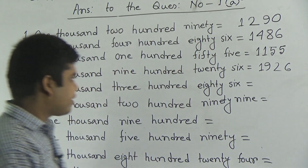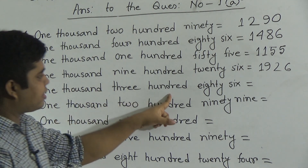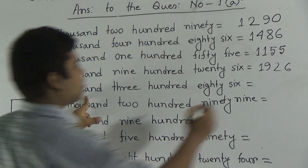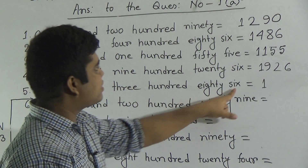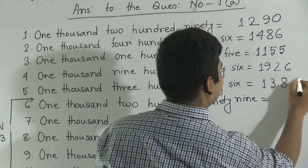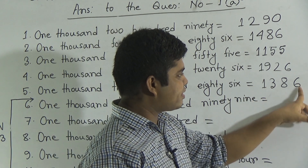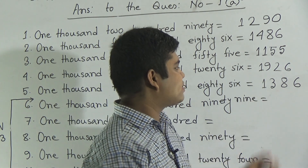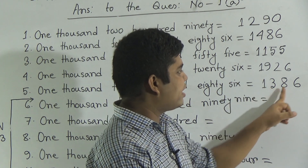Our last question, number 5: 1386. Dear students, 1000 means write 1 first. After that, 386 — write 3 for the hundreds. That means 8 and 6. Notice 1386: 6 is in 1's place, 8 is in 10's place, 3 is in 100's place, and 1 is in 1000's place. So we read this number as 1386.